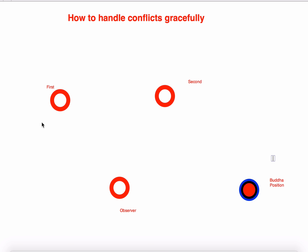To begin the exercise, go and sit in the first chair. This is the chair which represents the first position — that is your position. When you are sitting in this chair, think about the situation and the conflict from your point of view. Think about everything you can think about this conflict and feel all the feelings. After you are done, just get up from this chair without saying anything and go to the second position.